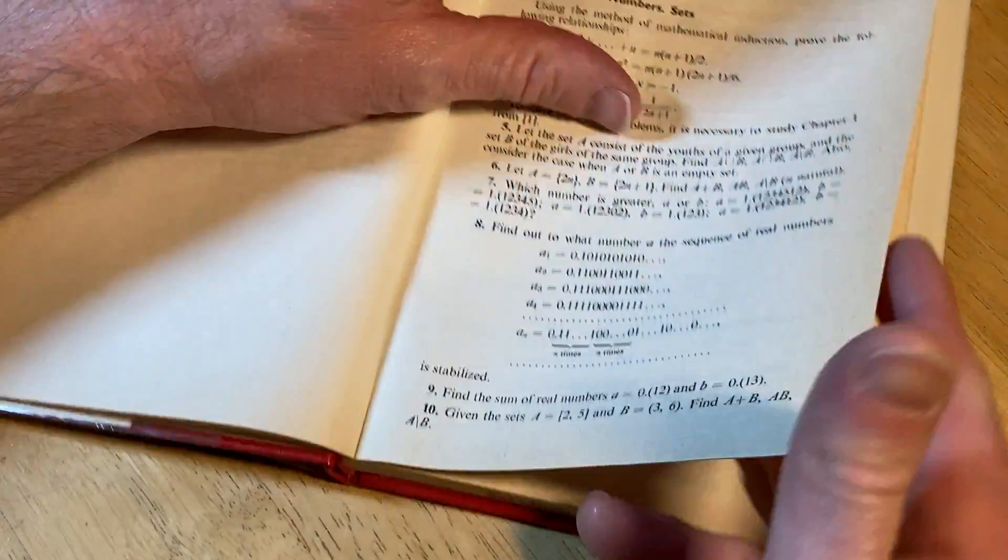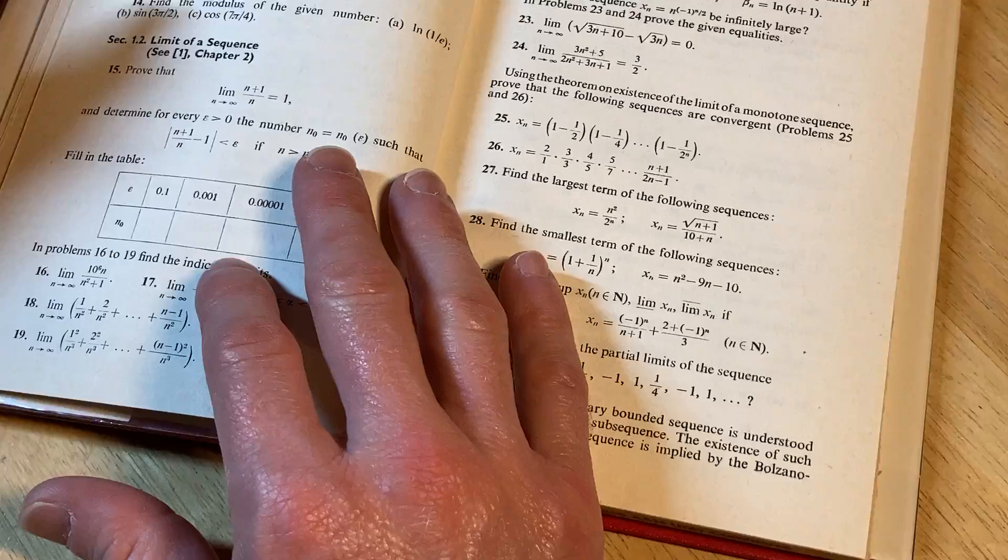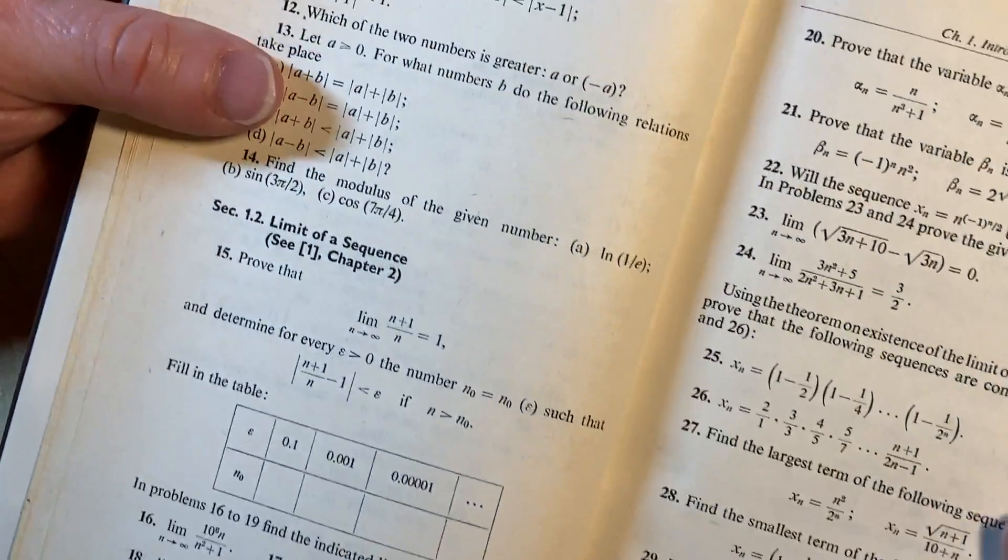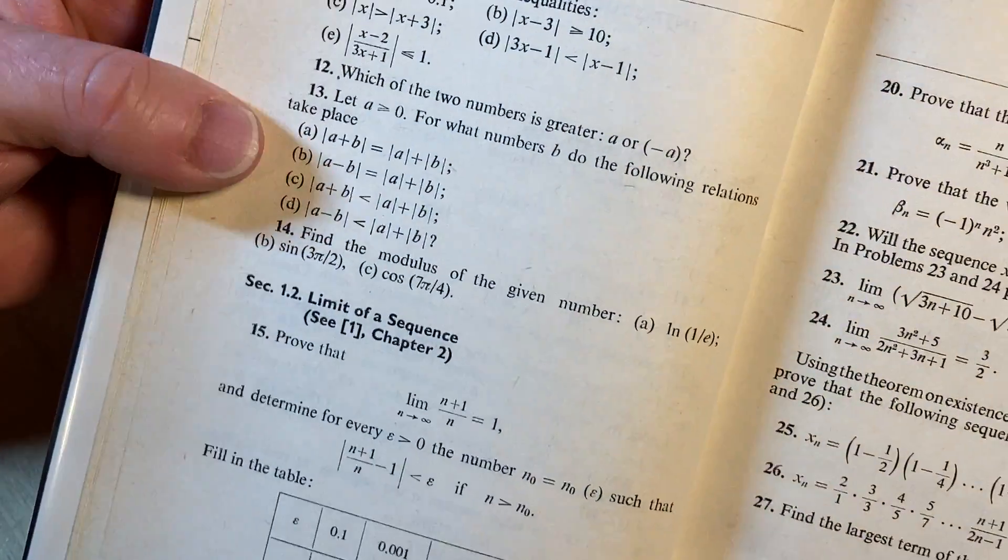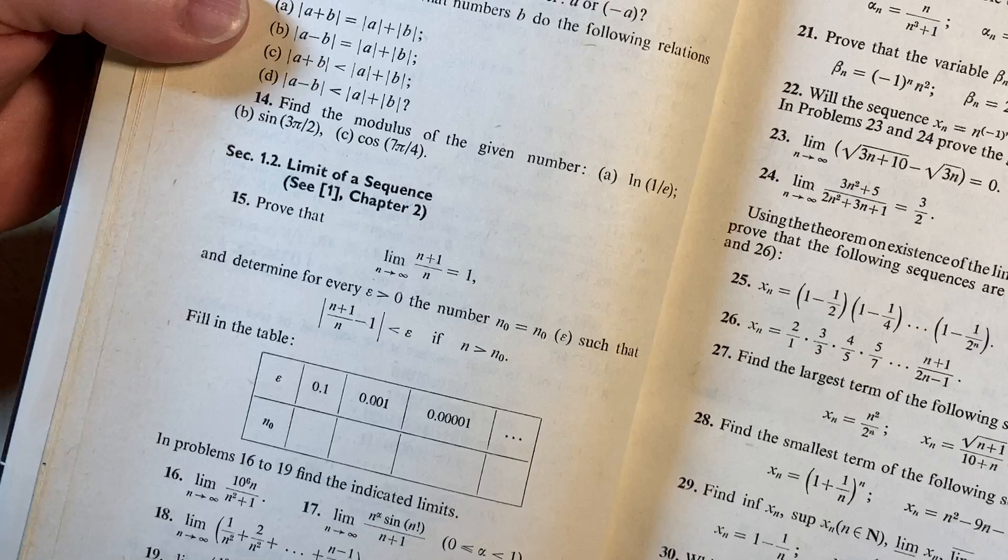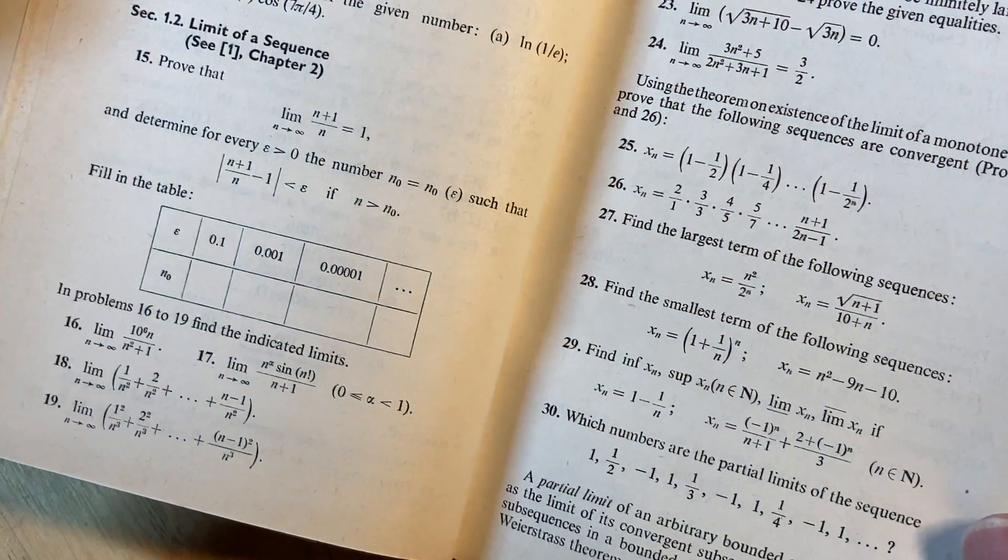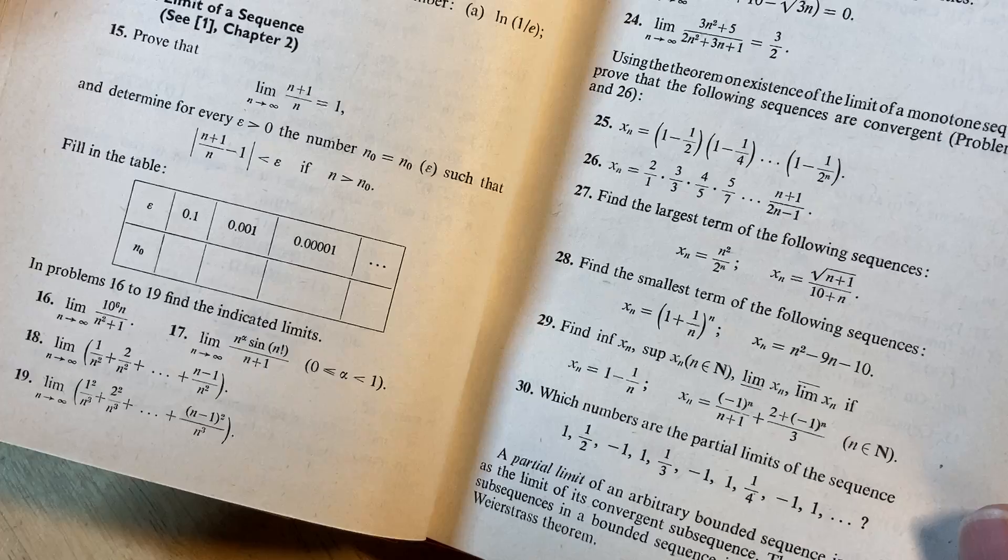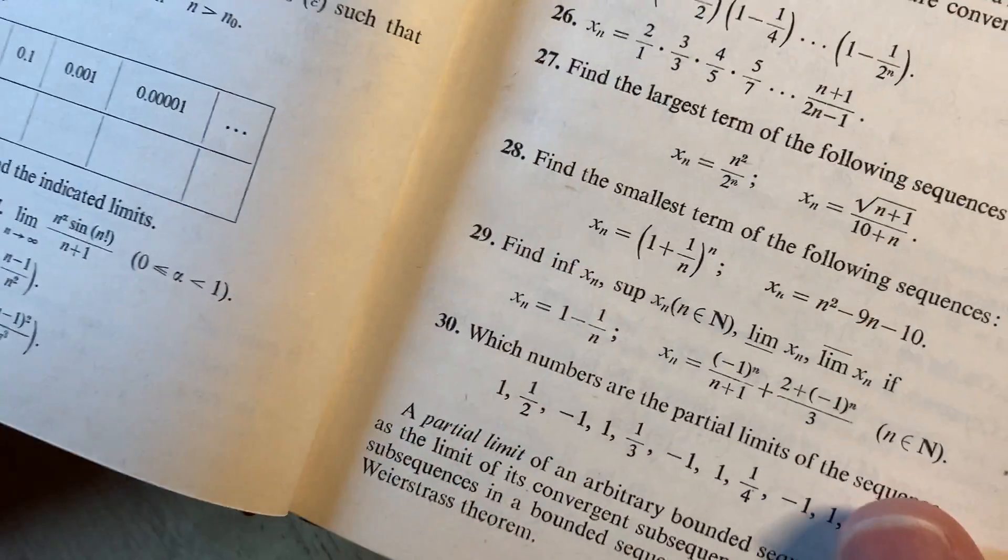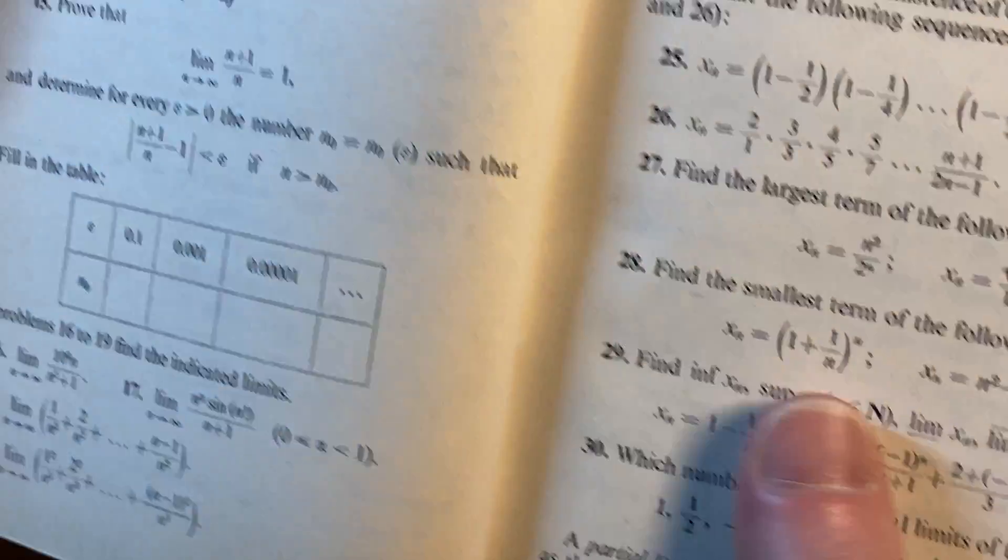Some cool problems here. And here's, this is pretty easy. Solve the inequalities. I mean, there's some easy stuff too. It's not insane. It's pretty fun actually. Some of these problems look pretty fun. Find the smallest term of the following sequences. Oh, that's cool.